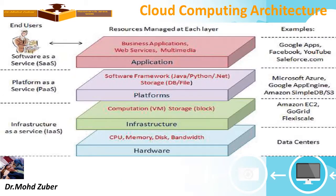Cloud computing architecture is divided into three parts: Software as a Service (SaaS), Platform as a Service (PaaS), and Infrastructure as a Service (IaaS). Some applications under Software as a Service include business applications, web applications, and multimedia. Examples include Google Apps, Facebook, YouTube, and Salesforce.